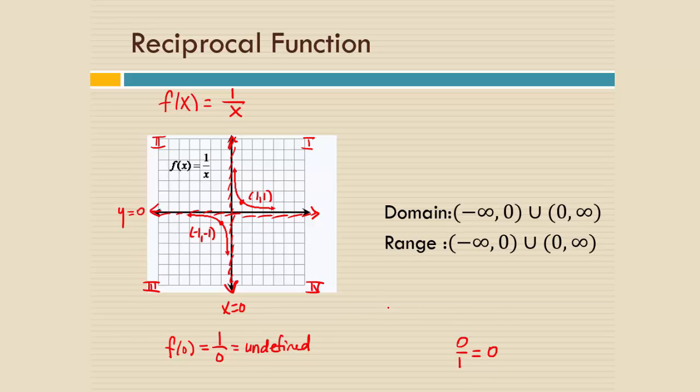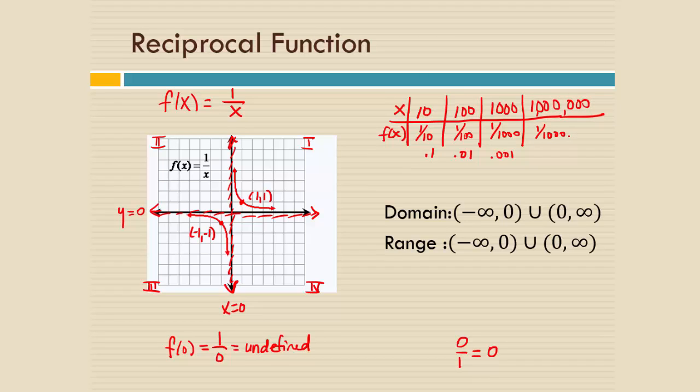And the reason why that happens, you can understand best if you try plugging in really big numbers. So watch what happens if I make a little x f of x chart. And let's say I plug in 10, for example. What's f of 10? 1 over 10, 1 tenth. What's f of 100? 1 over 100, or 0.01. What's f of 1,000? 1 over 1,000, or 0.001. What's 1 over 1,000 or 0.00001? So what's happening is I'm looking at points way out here on this part of the graph. And the graph is getting closer and closer and closer to what? The y values are getting closer and closer to 0, aren't they?